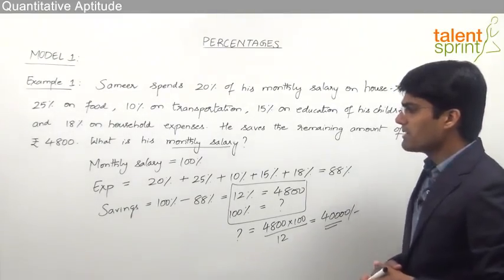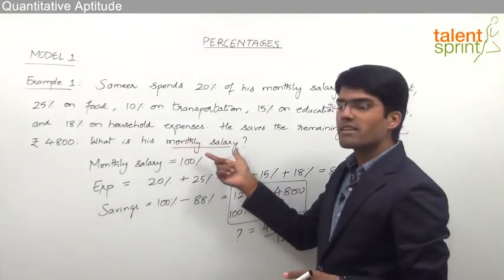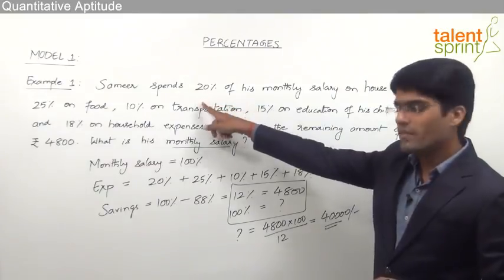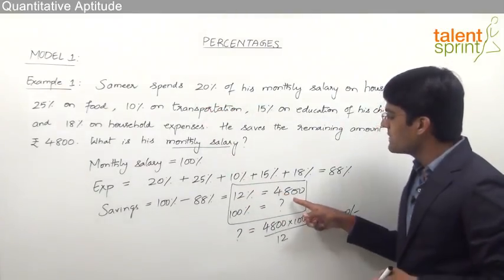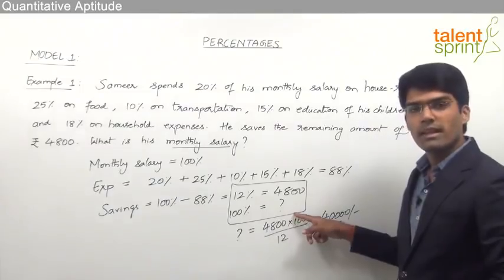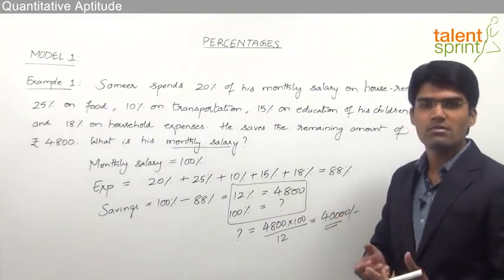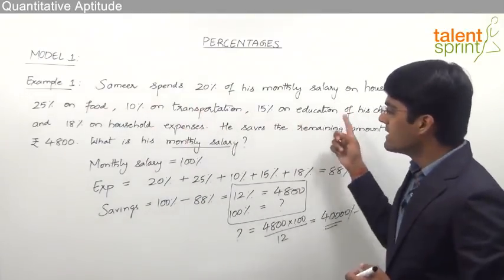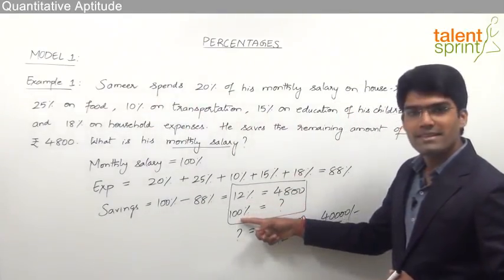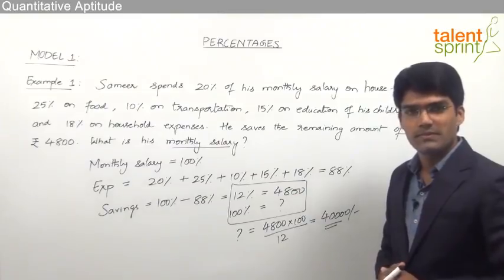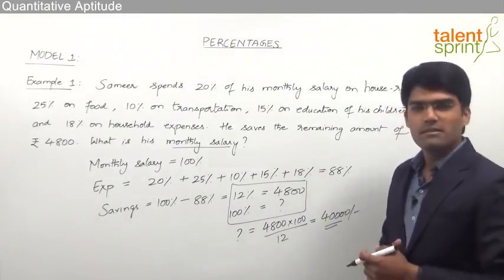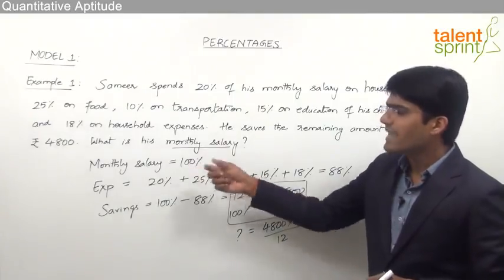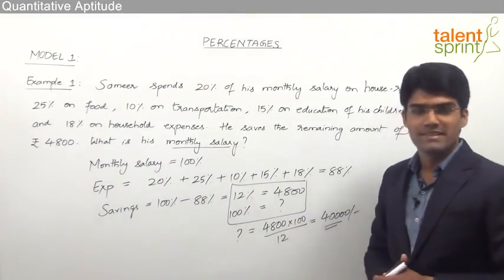Similarly, sometimes the question may ask: what is his house rent? We know that his house rent is 20%. So if 12% is 4,800, what is 20%? Again by cross multiplication, we can find out the house rent. For that matter, any other value can be calculated simply by taking the proper percentage and doing the cross multiplication. This is how we solve such basic percentage questions by assuming the total monthly salary is 100% and finding out the required percentage.